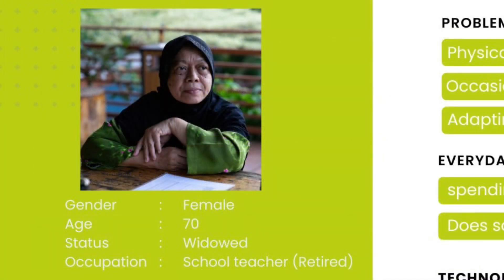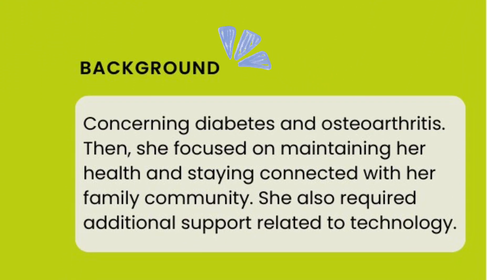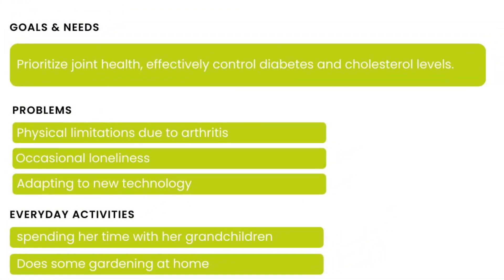Let's move on to the next persona — Madam Zaitun, who is roughly 70 years old, widowed, and has worked as a school teacher. After retiring, her background includes diabetes and osteoarthritis. She then concentrated on keeping her health and being connected to her family and community. She also required more technological assistance.